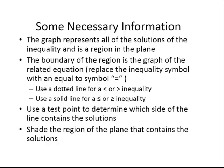Some necessary information when we are going to graph a linear inequality in two variables: the graph will represent all of the solutions of the inequality and is a region in the plane. The related equation of the line becomes the boundary of the inequality. We will mark the boundary with a dotted line if we have a strict less than or greater than inequality.